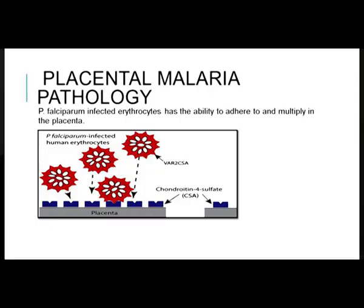The other important aspect is placental malaria. Only Plasmodium falciparum can cause placental infection. The infected erythrocytes have an ability to adhere and multiply in the placenta. The parasite-infected erythrocytes express a variant surface antigen 2-CSA that can adhere to chondroitin sulfate A receptors on the placenta, causing an inflammatory response, fibrin deposition, thickening of the placenta, and decreased placental function.